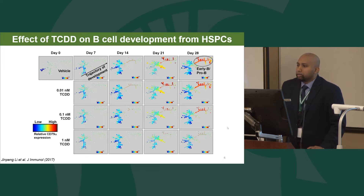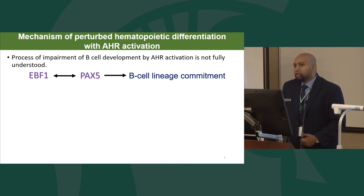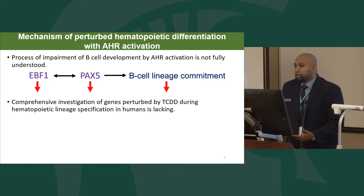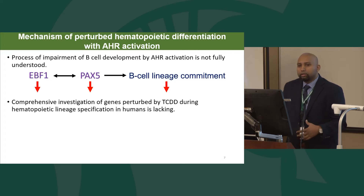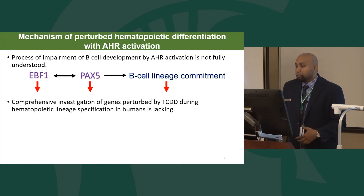Regarding the mechanisms by which this occurs — EBF1 (early B cell factor 1) and Pax5 are two important transcription factors for B cell lineage specification and commitment. Dr. Lee showed that the expression of these two genes was suppressed by TCDD treatment. However, there could be upstream regulators of these genes that were not investigated. There is not a comprehensive understanding of all the genes and pathways perturbed as B cells develop from hematopoietic stem cells, so we wanted to investigate how hematopoietic stem cells differentiate over time and what genes and pathways are affected by AHR activation.